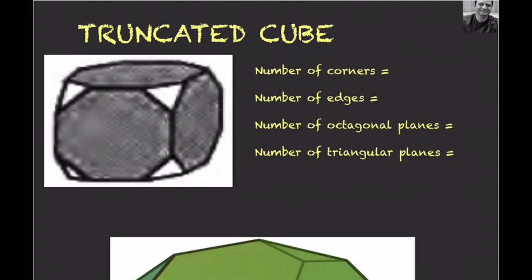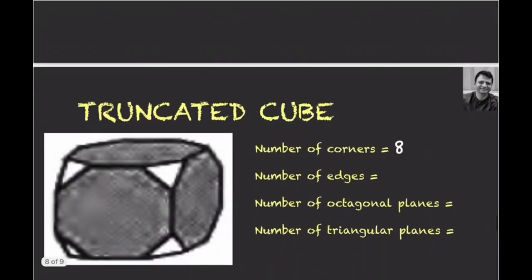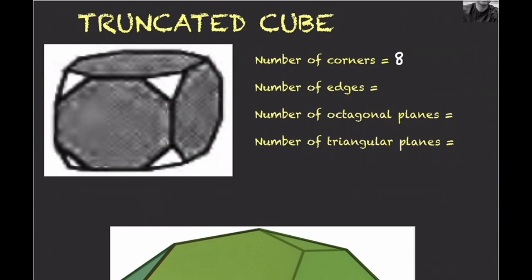For the truncated cube: the number of corners — initially 8, and since three lines meet at each corner, an equilateral triangle (with 3 corners) forms at each vertex, so total corners = 8 × 3 = 24. The number of edges — initially 12, plus 8 equilateral triangles each with 3 edges gives 8 × 3 = 24 new edges, totaling 36 edges. The number of octagonal planes = 6 (each original square face becomes a regular octagon). The number of triangular planes = 8 (one per original corner).